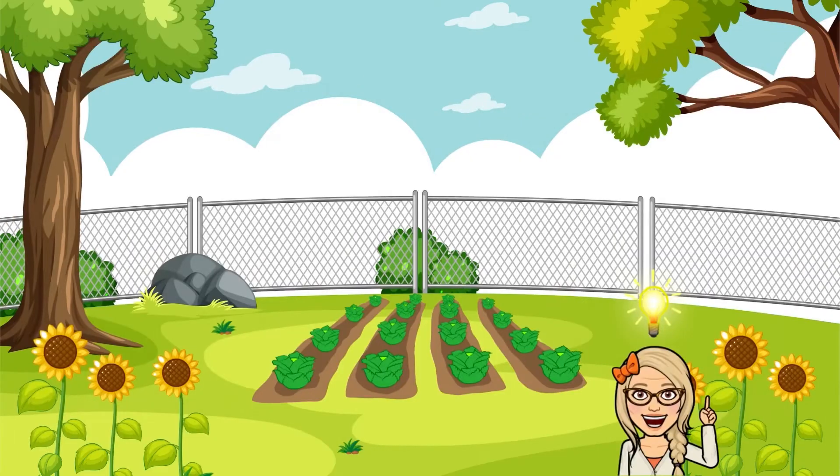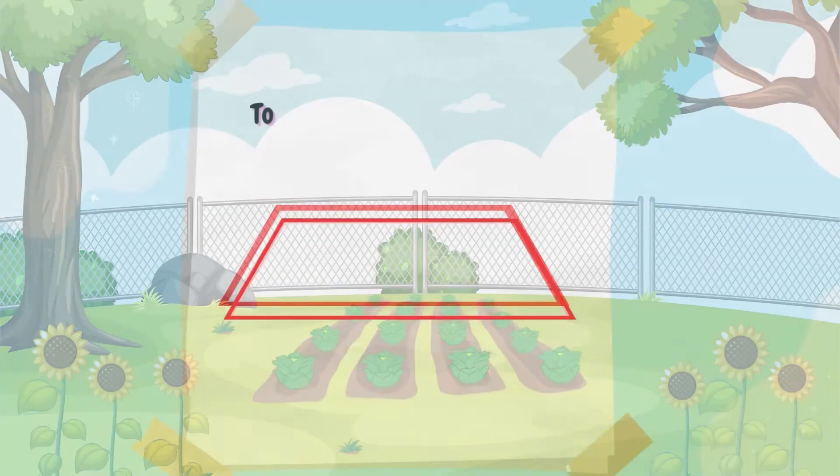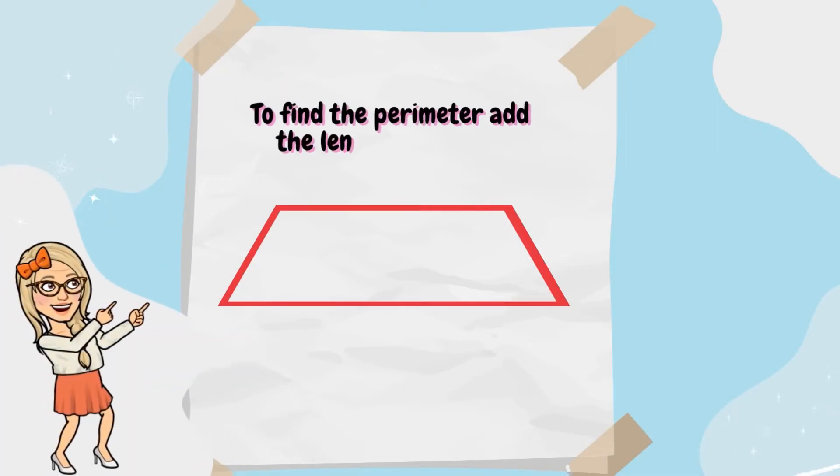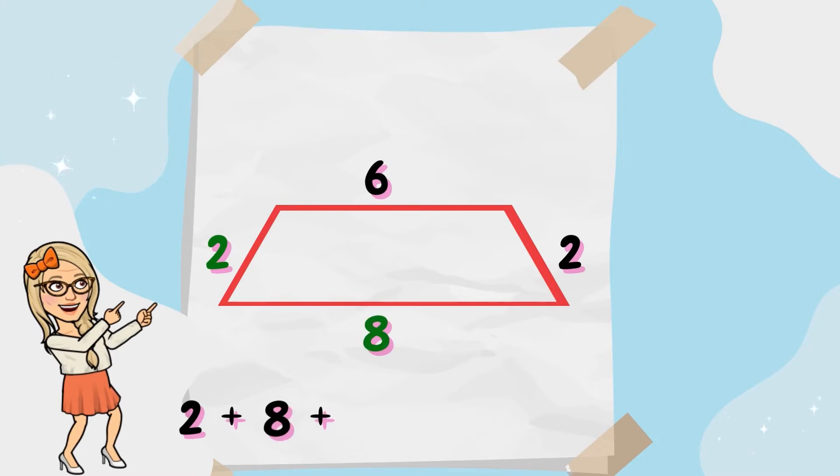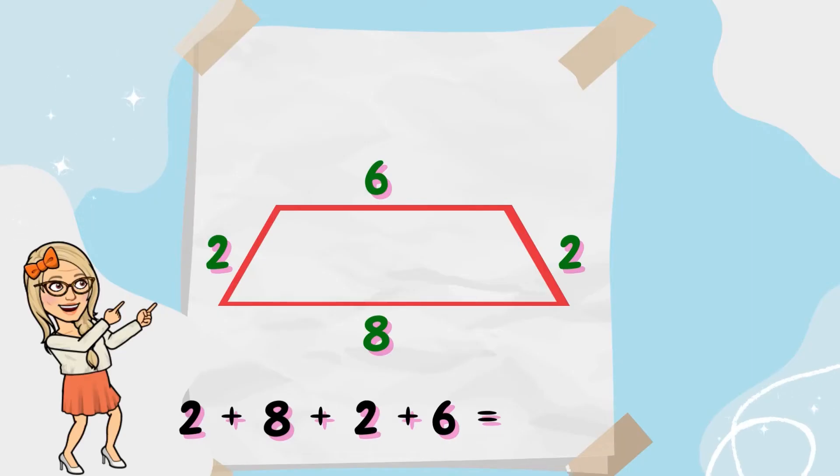Now, let's find the perimeter of my garden. To find the perimeter, add the length of all the sides together. 2 plus 8 plus 2 plus 6. I know it's a long number sentence. That's why I'll add the easier numbers first. 2 plus 8 equals 10. Then, 2 plus 6 equals 8. Then, it's very easy to add 10 plus 8, which is equal to 18. It's helpful to break up long number sentences into smaller ones to help you add. So, the perimeter of this trapezoid is 18.